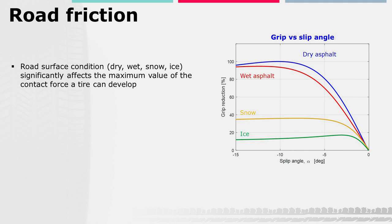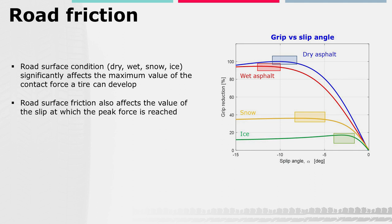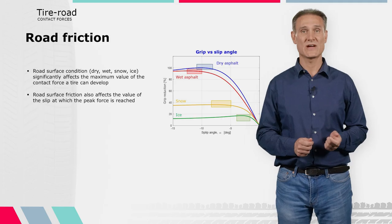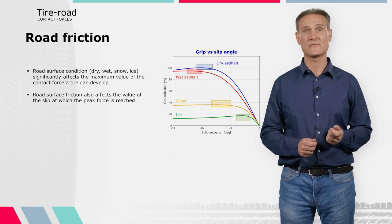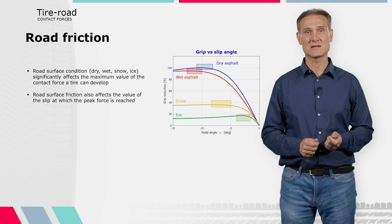The figure shows the percentage reduction of the friction coefficient with respect to dry asphalt. The peak friction coefficient, or grip, reduces by about 10–20% on a wet surface, and much further on snow — about 50–60% — and on ice — about 80–90%. Notice that road condition not only affects grip, but also the slip at which the peak friction is reached and the nearby curvature. This effect must be accounted for during the design of active control systems such as ABS and ESP.